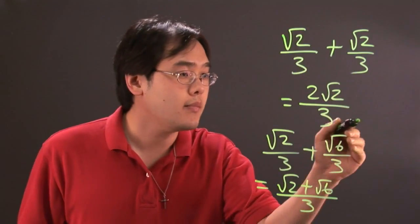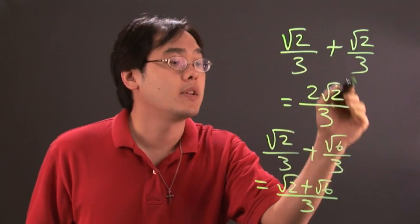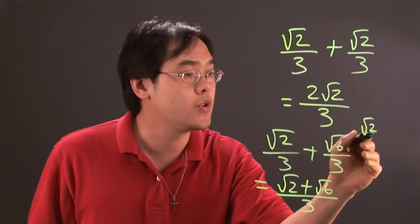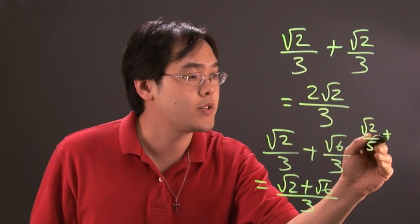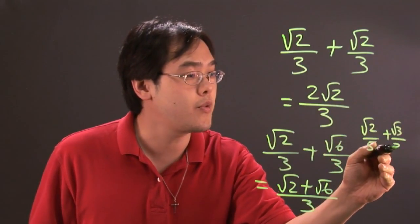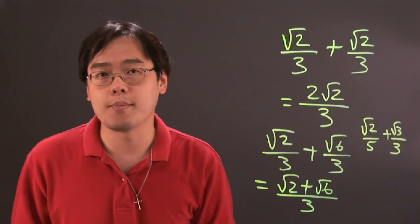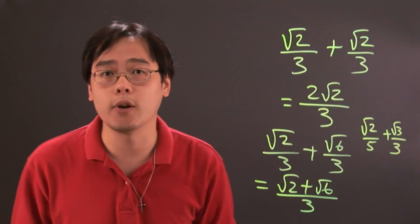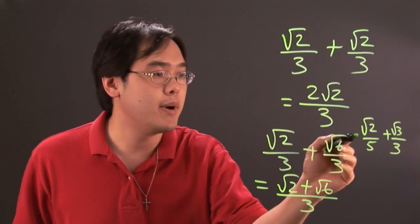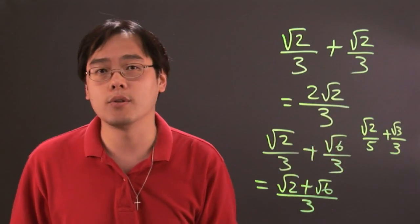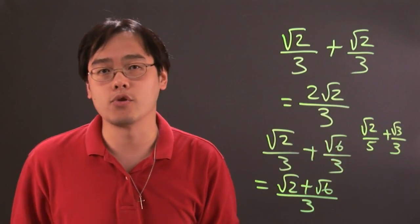If you have, let's just say, square root of 2 over 5 plus square root of 3 over 3, you're still going to have separation. You've got to find the least common denominator, which is not too hard, but because the numbers underneath the radical are different, you have to leave those terms separate.